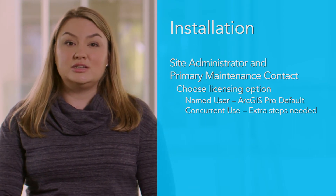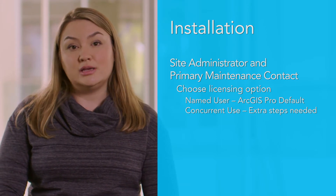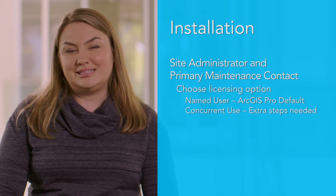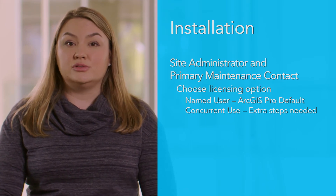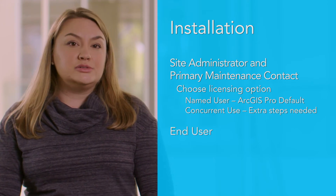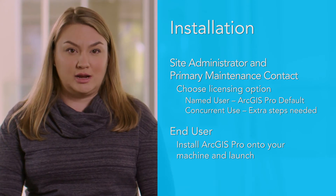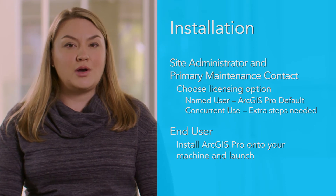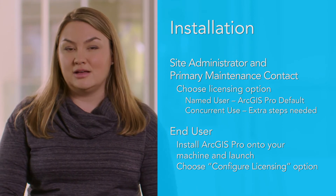First, you'll need to provision the licenses through My Esri by allocating the number of licenses for concurrent use. The standard provisioning and authorization steps apply and can be found at desktop.arcgis.com. Then you'll need to notify your end users which method to use for logging into ArcGIS Pro. If you're an end user, install ArcGIS Pro on your machine from the location provided by your site administrator. Once your site administrator has configured concurrent use licensing for ArcGIS Pro, simply launch the application and choose the configure licensing option to pick your license level to get started.